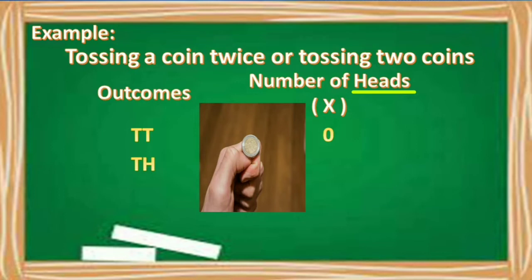Kung ang outcome naman natin ay tail, head. Ibig sabihin, sa unang coin, tail. Then sa pangalawang coin, head. Ano yung magiging value natin dito? Okay, so one. Kasi isang head lang yung lumabas. What if ang outcome natin ay head, tail? Sa unang coin, head, tail. At sa pangalawa, tail naman. So ang value natin dito is one.